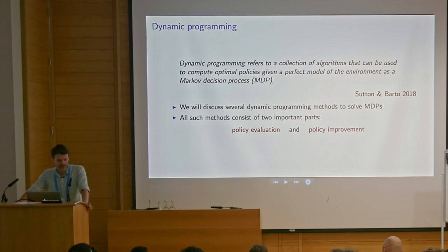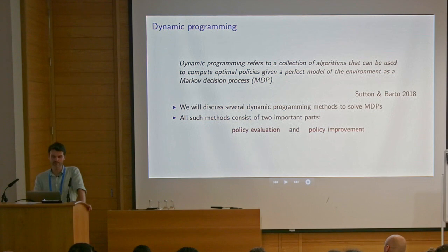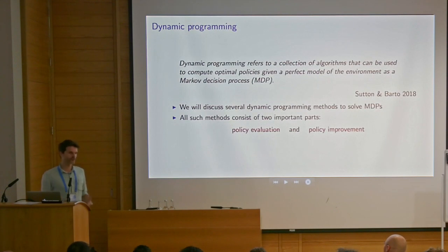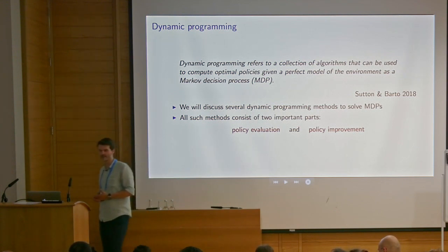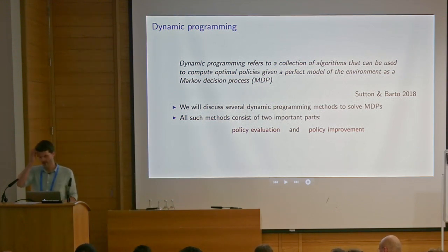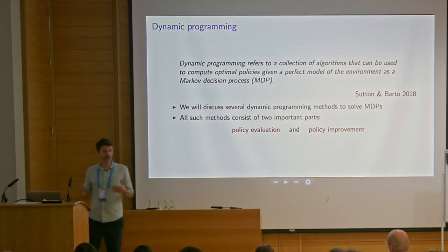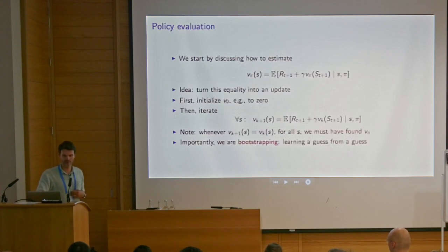I'll next discuss a couple of methods that can be used to solve Markov decision processes. All such methods basically consist of two important parts: policy evaluation and policy improvement. The reason why this is important is partly to understand where all these other methods come from — for instance the sampling-based methods that I personally do more research on — but also to understand that these parts are important for all our other methods as well, including our sampling-based methods.